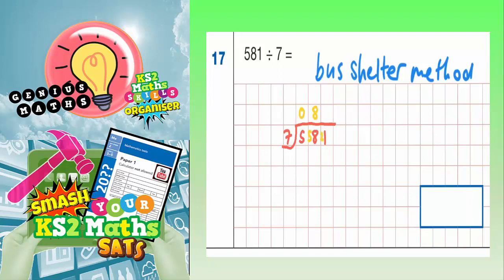This makes 21. 7s into 21 goes exactly 3 times with nothing left over, so our final answer is 83. We just need to write that into our answer box: 83.